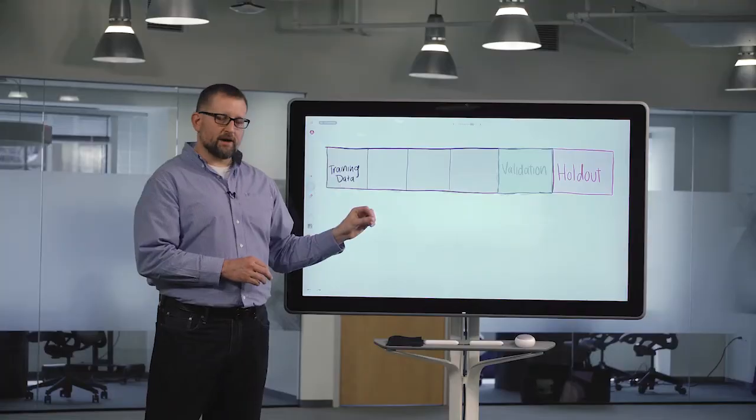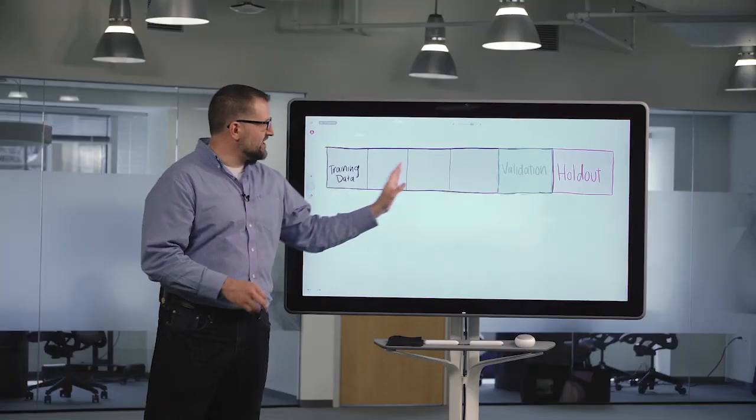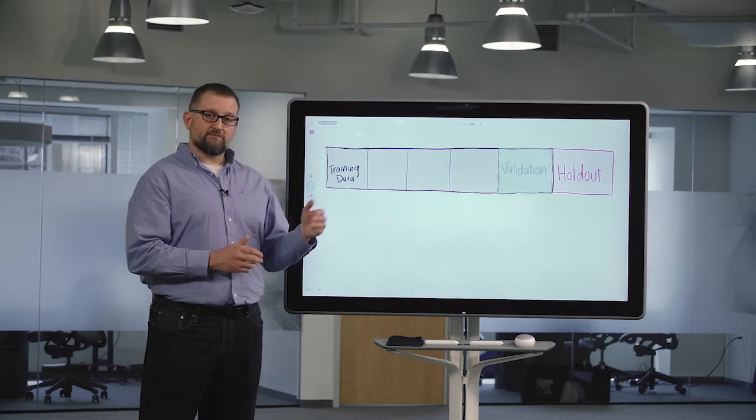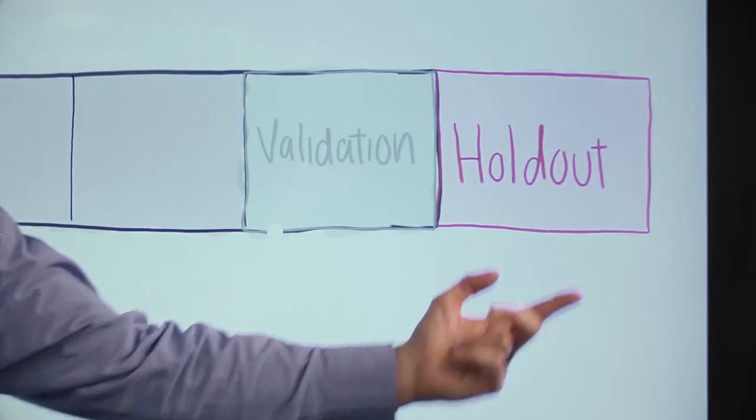For those three models we see which one fits the validation data the best, we choose that model, but now we can't use any of this data because it's all been used in model selection. So what we do is we take that final chosen model, we go to our holdout set, we use it to make predictions, and we evaluate how well that model predicts on the holdout set.